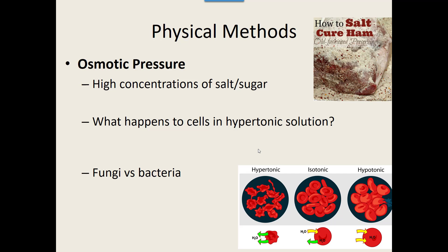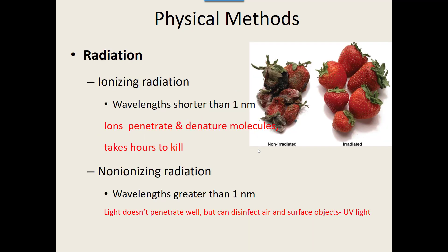Radiation is another physical method. Ionizing radiation has really short wavelengths that can penetrate and kill molecules inside a specimen, though it can take hours to kill. For example, if you irradiate strawberries, a couple weeks later they still look fresh — because every bacteria, fungus, and fungal spore inside and outside has been killed, nothing can break them down. However, it takes a lot of time and money, so we don't do it all the time.